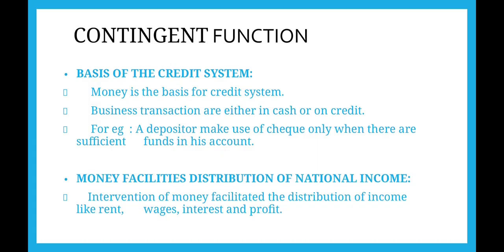The next functions of money are contingent functions. Under that, we see the basis of credit system — credit creation by commercial banks was possible because of money's store value. The next contingent function is that money facilitates distribution of national income in the form of rent, wage, interest, and profit.